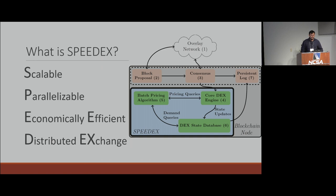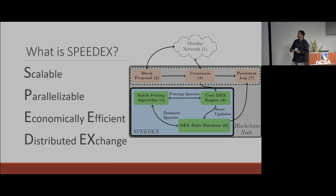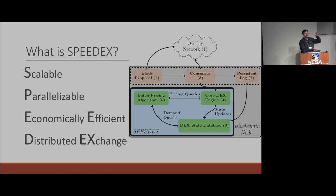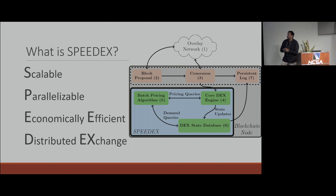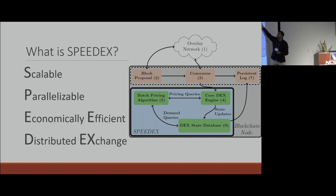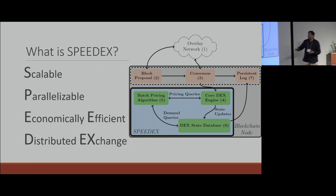SpeedEx is an attempt to build a scalable, parallelizable, economically efficient distributed exchange. The idea is: imagine you have a large network — either centralized or distributed. There are multiple parts. One part is block proposal: a bunch of orders come in and get aggregated into a block. This is a batched exchange as opposed to a continuous exchange. A bunch of orders get aggregated, and then this block proposes the set of orders to handle in this batch. If you're doing it on a blockchain, this block of suggested orders — the order book itself — has to go through a consensus process. Everybody agrees on the set of orders to fulfill in this time step. Then you decide exactly which orders to match, and that part is SpeedEx.